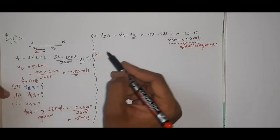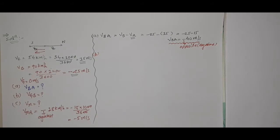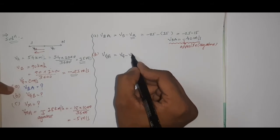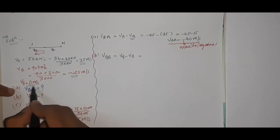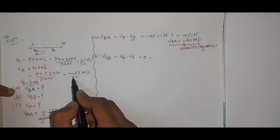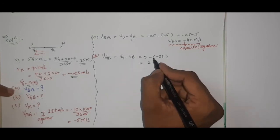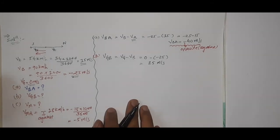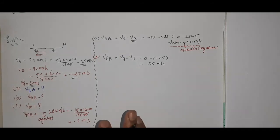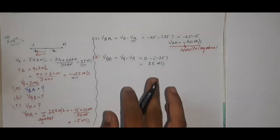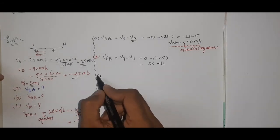Part (b): velocity of ground with respect to B. vGB = vG − vB. vG = 0 (ground is steady), and vB = −25. So: 0 − (−25) = +25 meter per second. This makes sense because when we travel in a train, the trees outside appear to be running — the trees are actually steady but we perceive their velocity equal to the train's velocity, which is 25 meter per second.